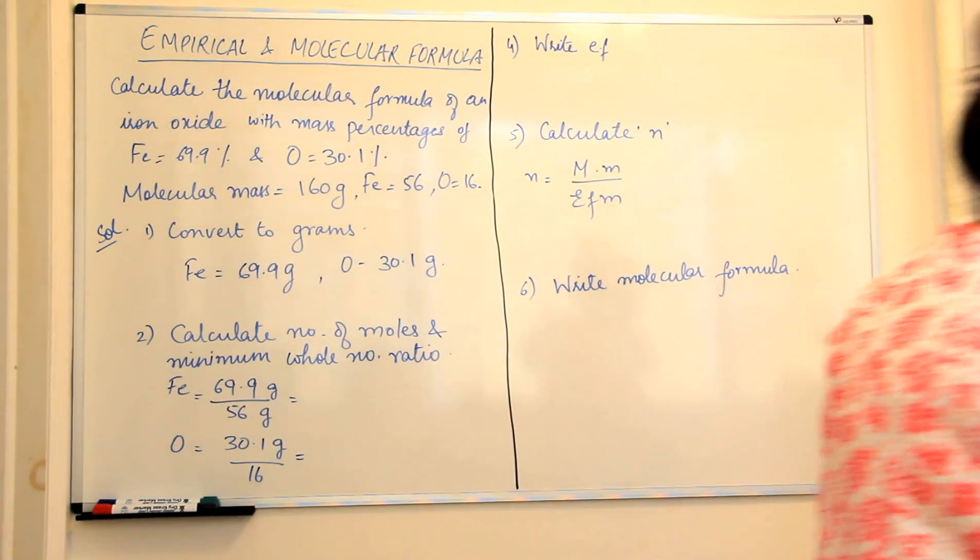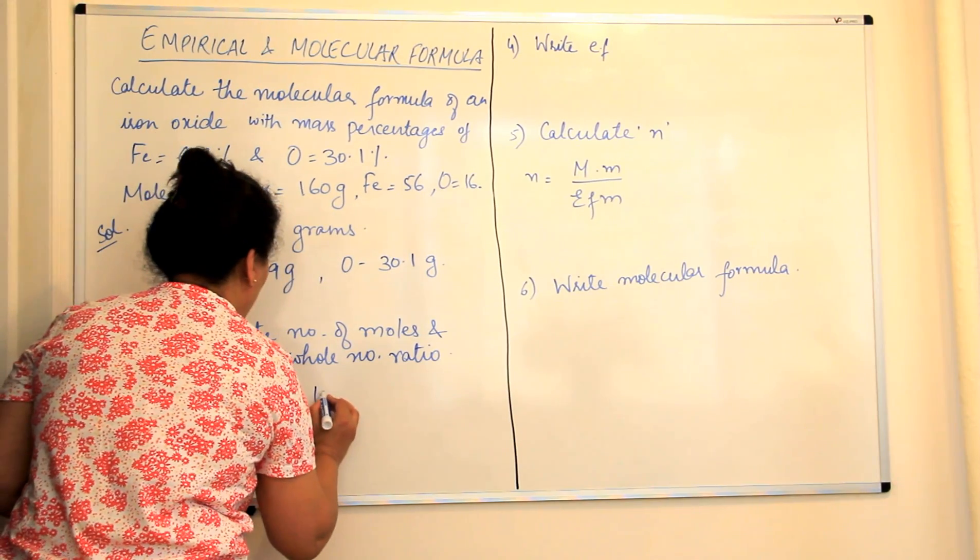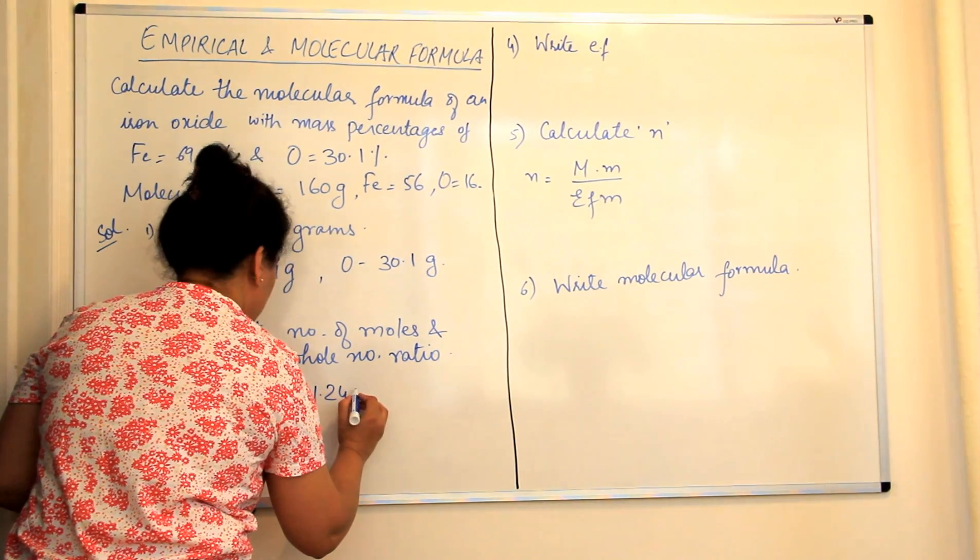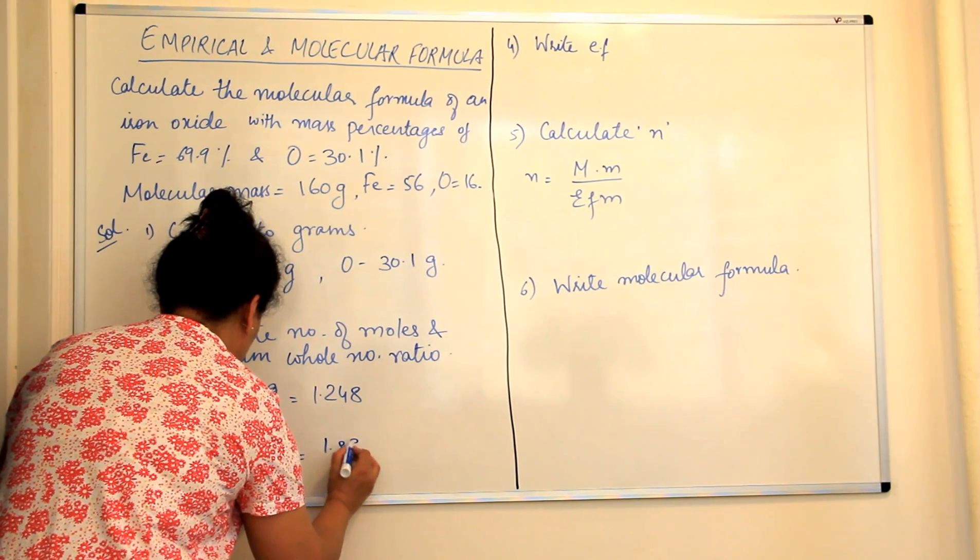So what are the values that you get? The values you get on finding out these ratios is 1.248 and the value of oxygen is 1.881.